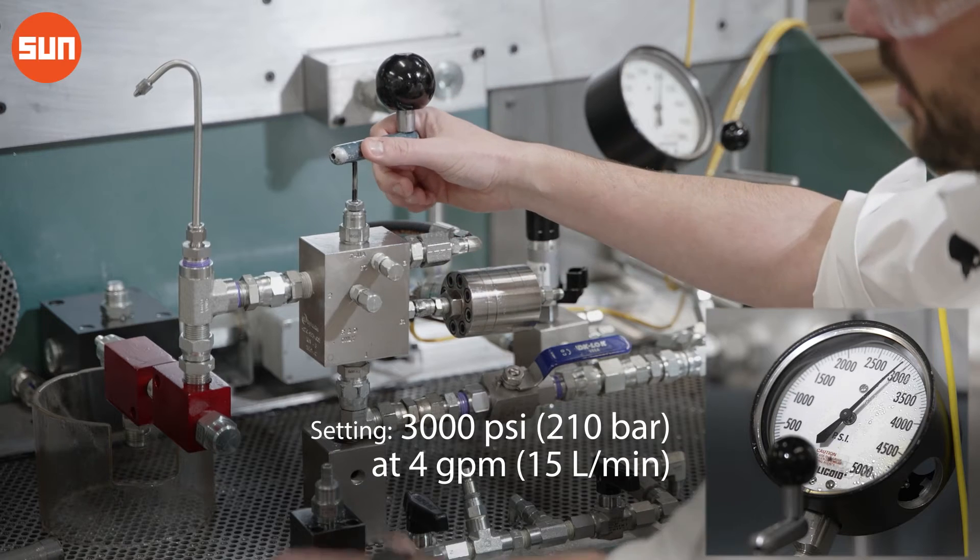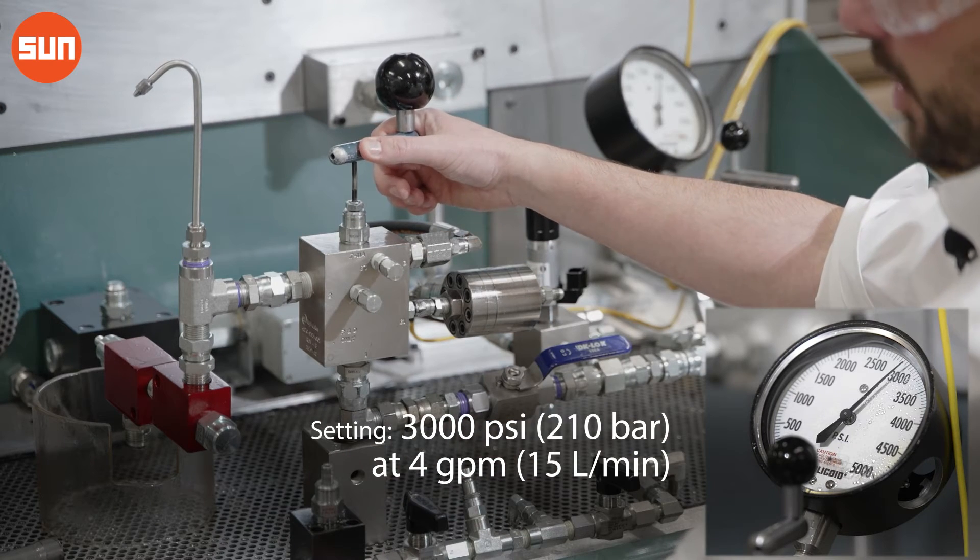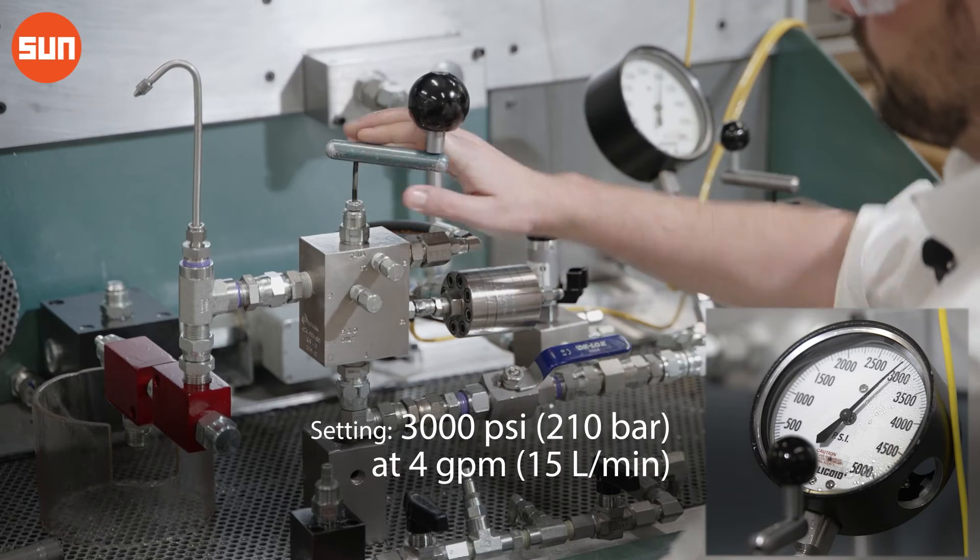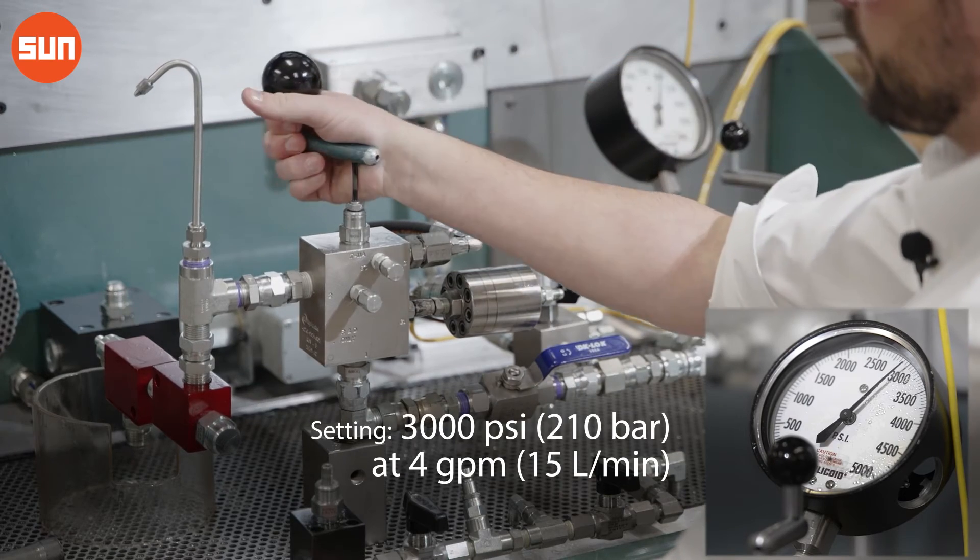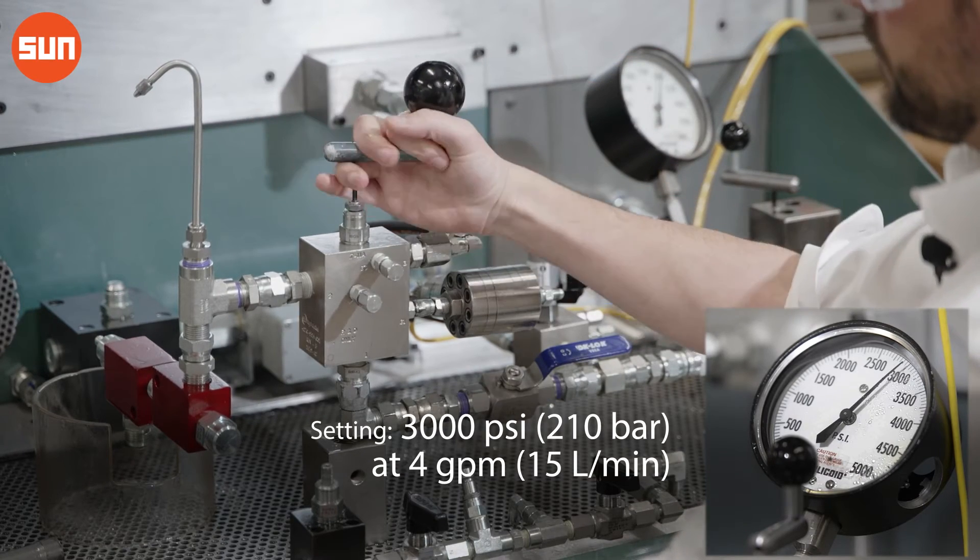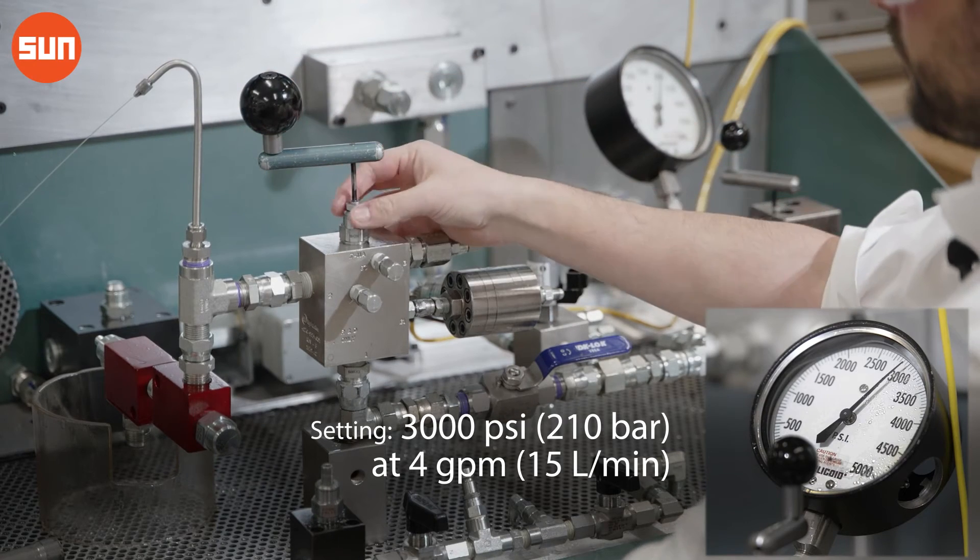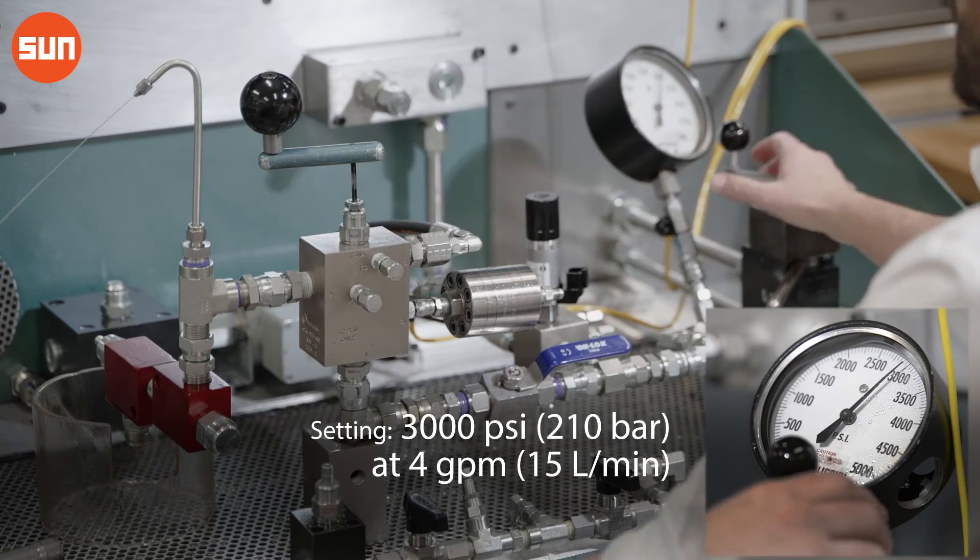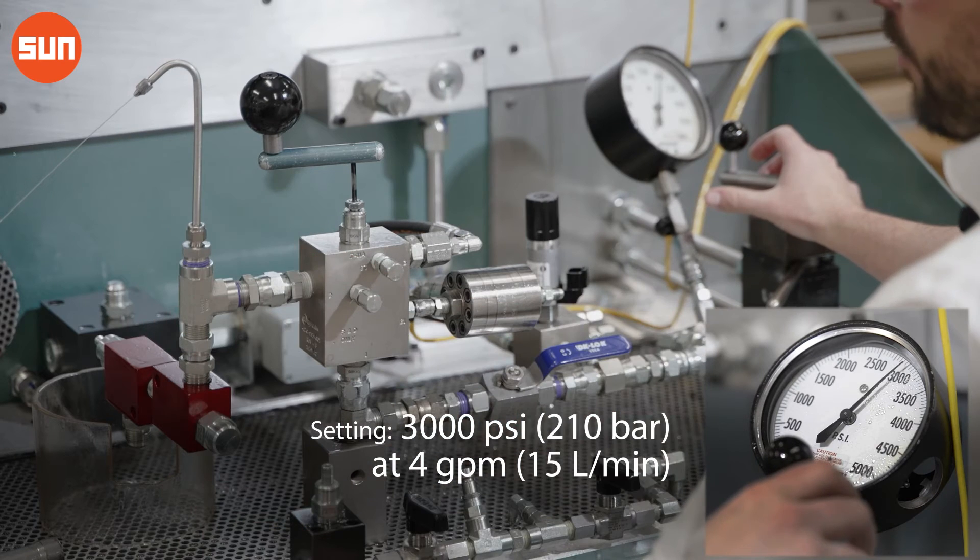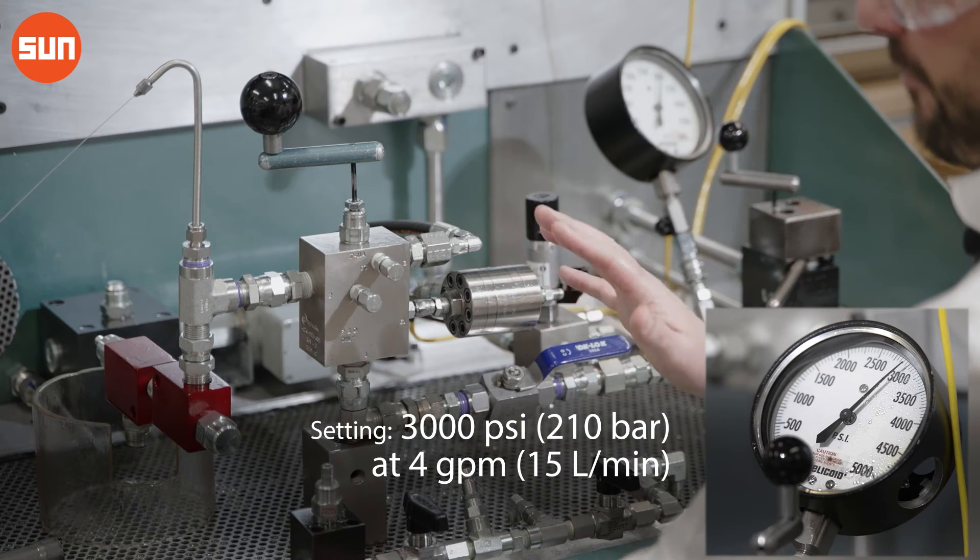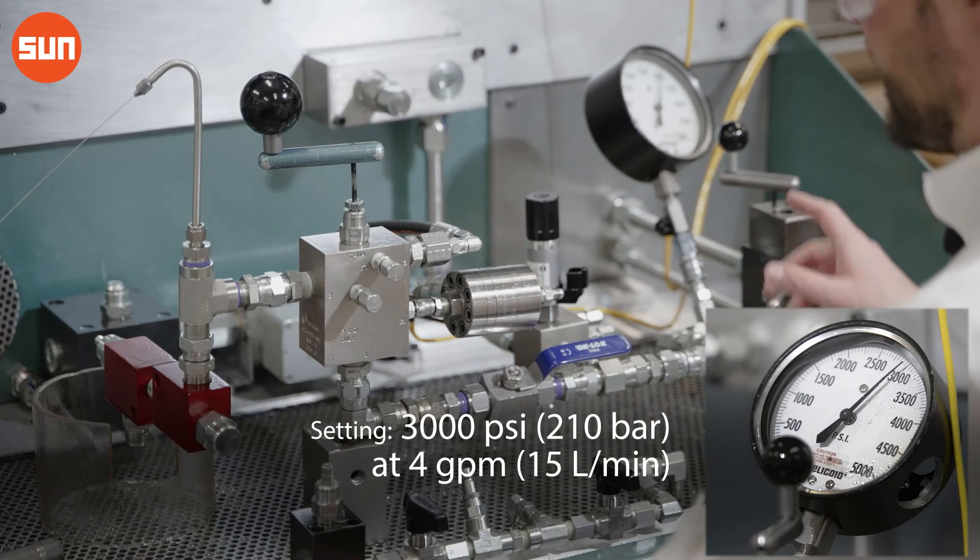We're going to need about one turn in order to start seeing some flow out of the P-tube. Once we have flow coming out of our P-tube, now we know we've found our approximate set point.